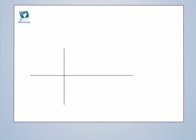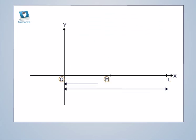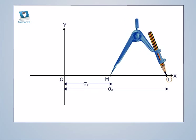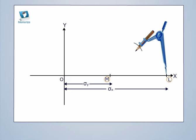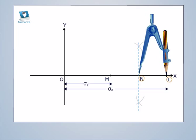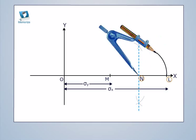Using some suitable scale, mark ol and om from the origin o equal to sigma x and sigma y respectively on the x-axis. Bisect lm at n. With n as center and nl as radius, draw a circle.